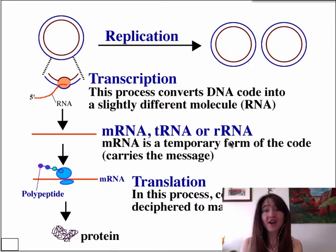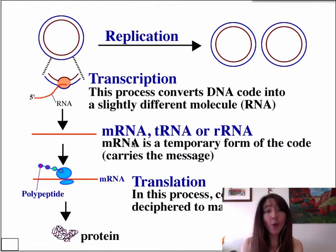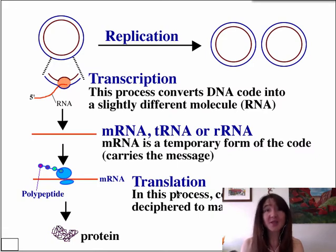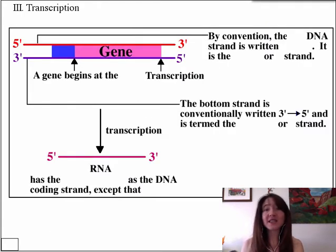Now, tRNA and rRNA do their job in the cell as RNAs. That is, they do not go on to be further translated into a protein product. But what's cool about them is that they both do their job helping mRNA to get converted into protein products. So tRNAs and rRNAs are the workers of translation, and they do their job as RNAs. Let's go ahead and talk about the process by which these RNAs are synthesized, and the first thing we have to do is cover a lot of lingo.